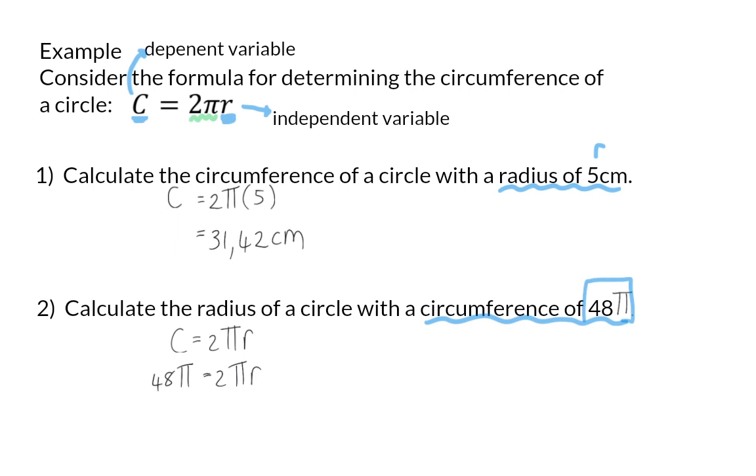To get rid of the 2 pi on the right-hand side, I'm going to do the inverse operation of multiplication, which will be dividing by 2 pi on both sides. Once I've done this, on the right-hand side, I'm left with only the radius, and on the left-hand side, I have the answer of 24, because pi divided by pi is 1, and 48 divided by 2 is 24.